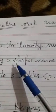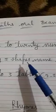Then any five shapes name with the spelling. Shapes name: C-I-R-C-L-E circle, S-Q-U-A-R-E square,